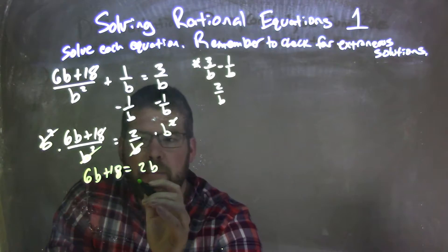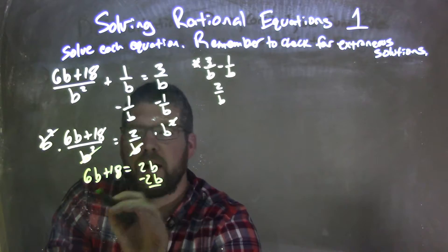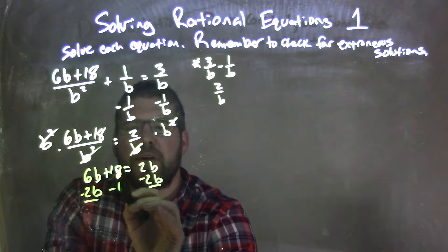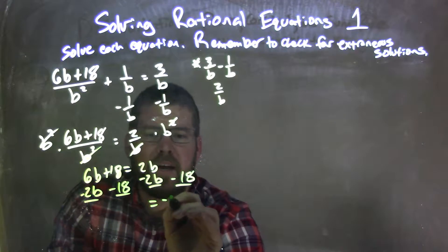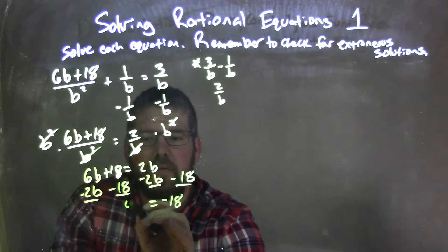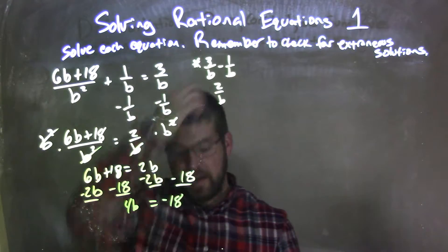I now can bring my b's together, so I'm going to subtract the 2b to both sides, and I'm subtracting 18 to both sides. There's nothing there, it's 0, so we just have negative 18 on the right, and 6b minus 2b is 4b on the left.